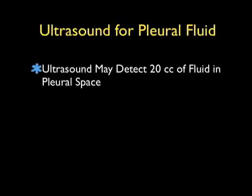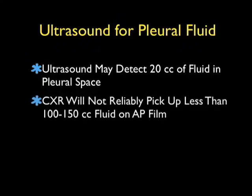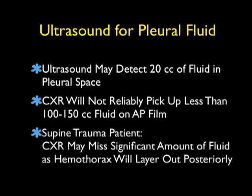In this SoundBytes module, we're going to look specifically at the use of bedside ultrasound to detect pleural fluid. Ultrasound has been found to detect as little as 20 cc's of fluid within the pleural space. In contrast, a chest x-ray will not reliably pick up less than 100 to 150 cc's of fluid on an AP film. This problem is only compounded in the supine trauma patient, where a chest x-ray may miss a significant amount of fluid as a hemothorax will layer out posteriorly and can be very difficult to detect on this film. For these reasons, bedside ultrasound may offer a more accurate way of diagnosing pleural fluid.